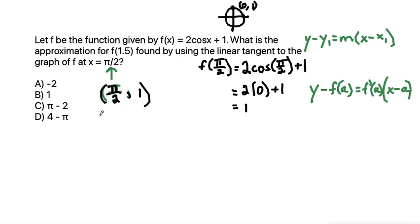We found that this is our a comma f of a. Let's go ahead and find our derivative at a first. So finding our derivative, let's first find f prime of x is equal to the derivative of 2 cosine x plus 1.